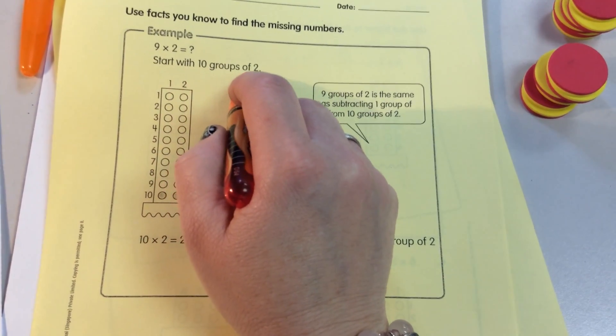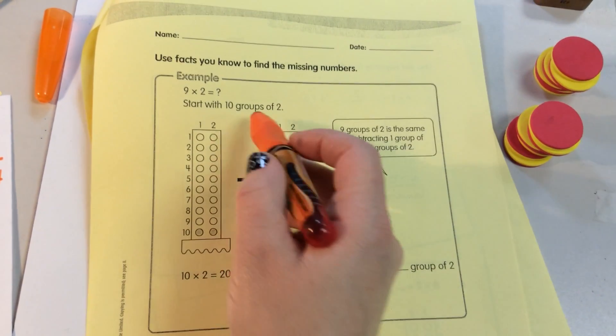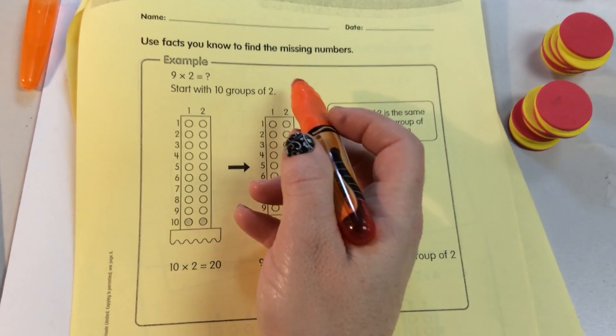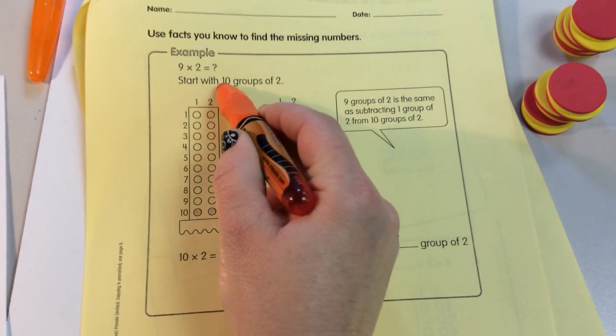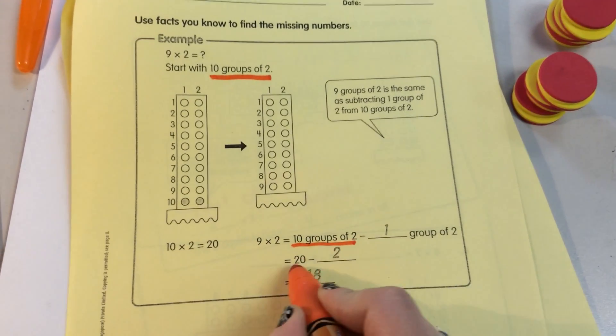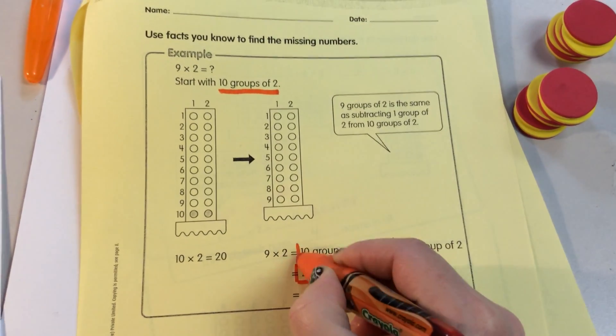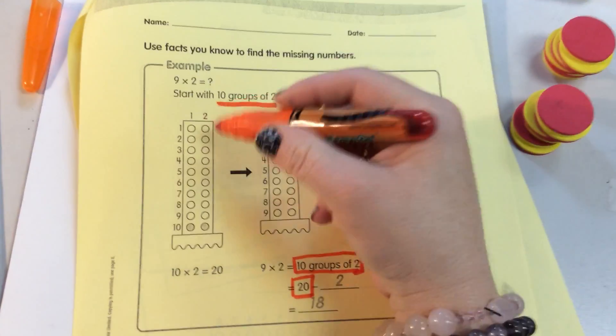Start with 10 groups of 2. So here we have, we're going to start with 10 groups of 2. Because that is a number that we're very familiar with. We know that 10 groups of 2 is 20. We know that already. It's right here. 10 groups of 2 is 20. And they show it here.